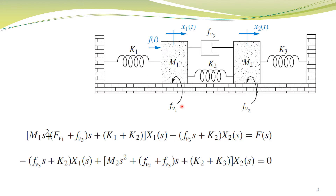If we carefully look at these equations, what we see is that in this mathematical model, x1(s) is multiplied by some of the impedances which are connected to displacement x1. The impedance k1 is connected to this displacement, impedance k2 is connected to this displacement, impedance Fv1·s is connected to this displacement, impedance Fv3·s is connected to this displacement, and impedance m1·s² is connected to this displacement. So x1 is being multiplied by the sum of impedances which are connected to this displacement.